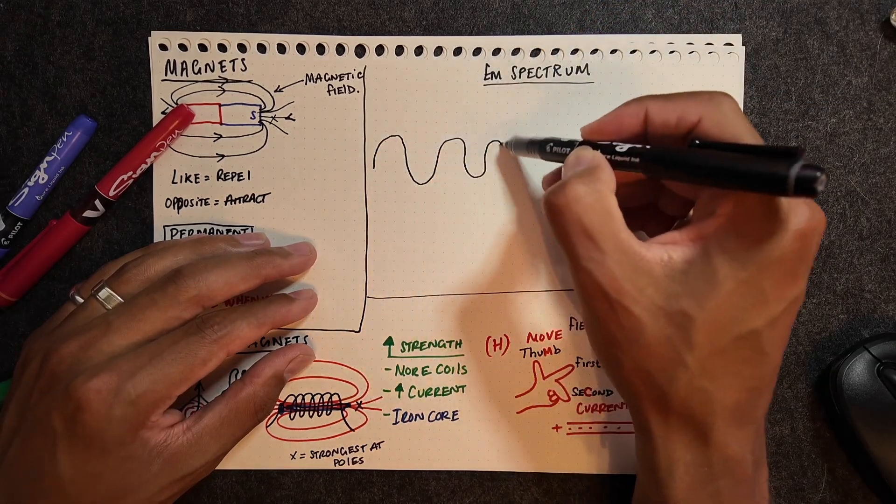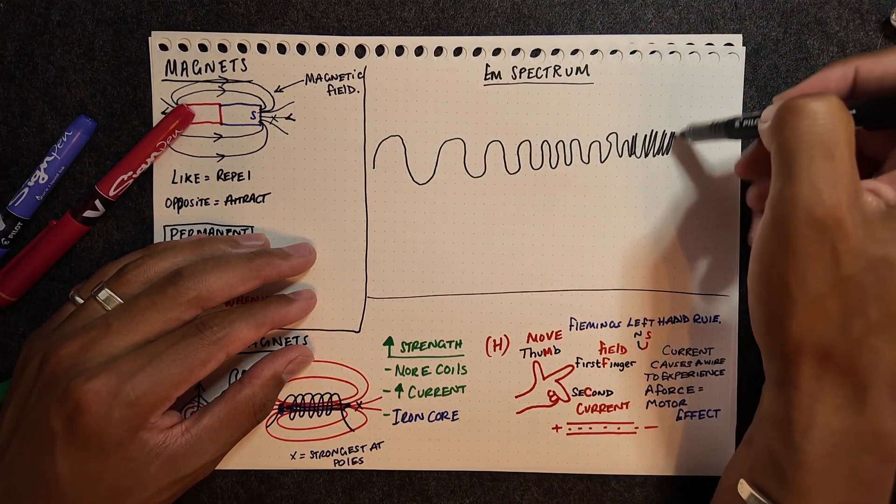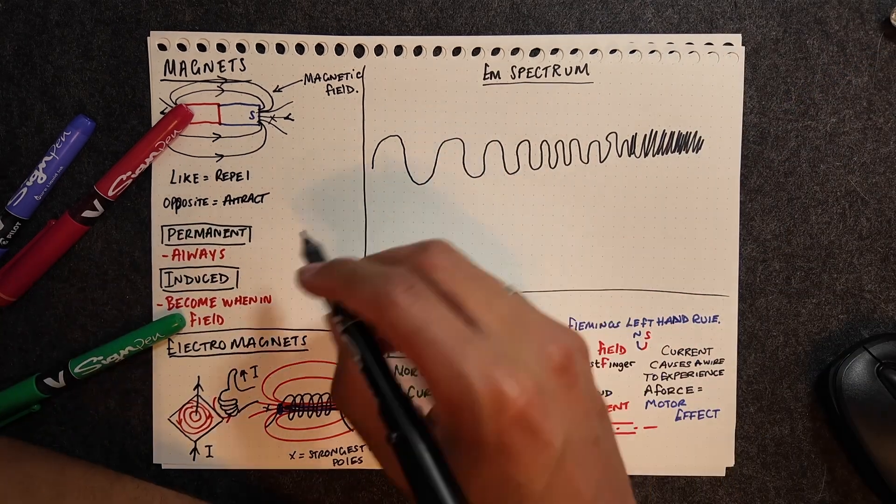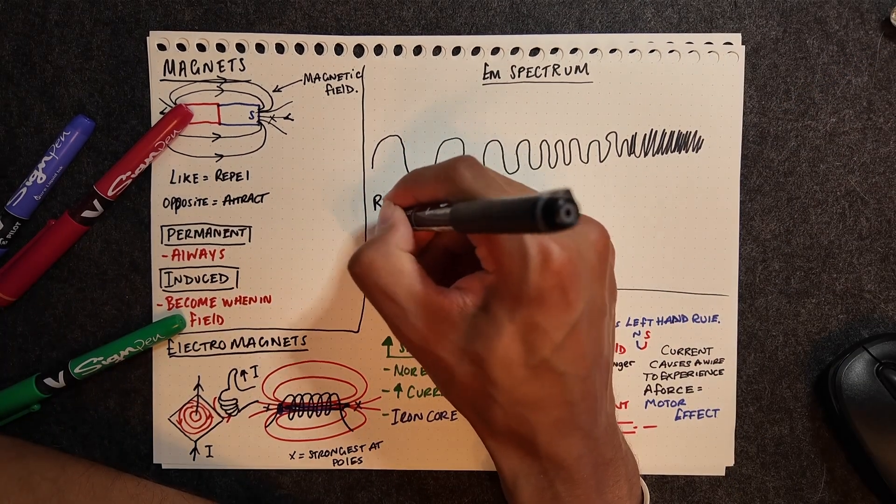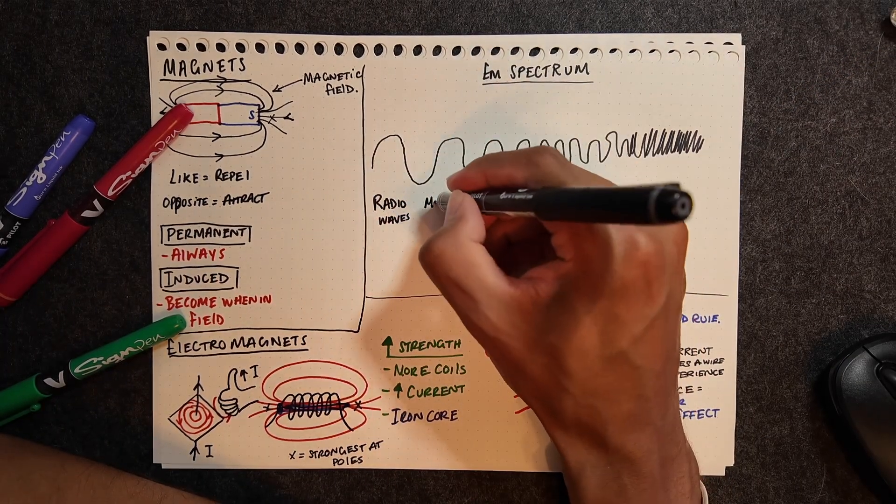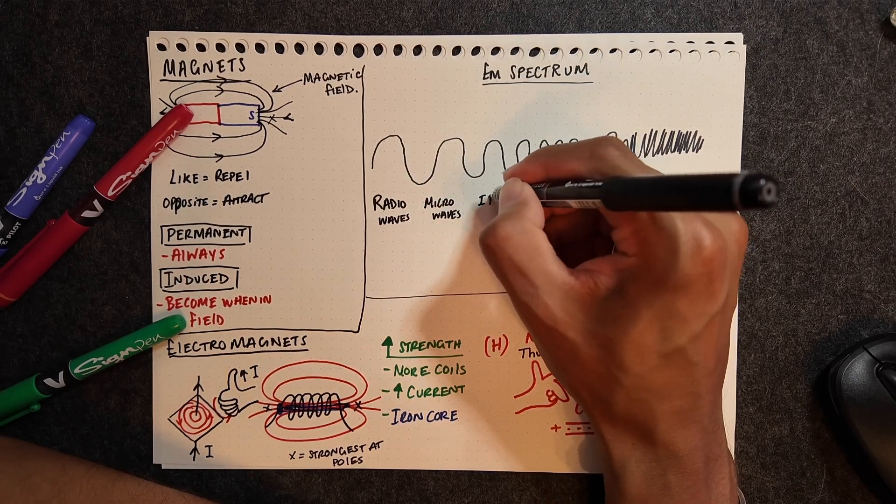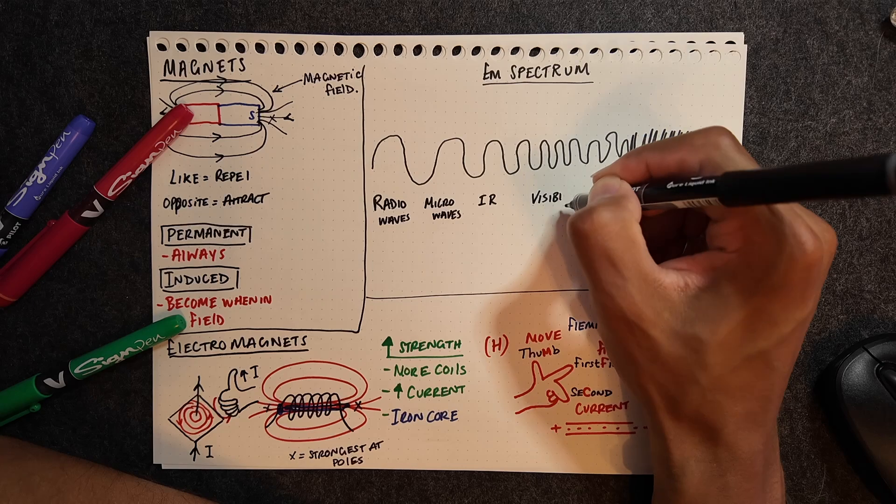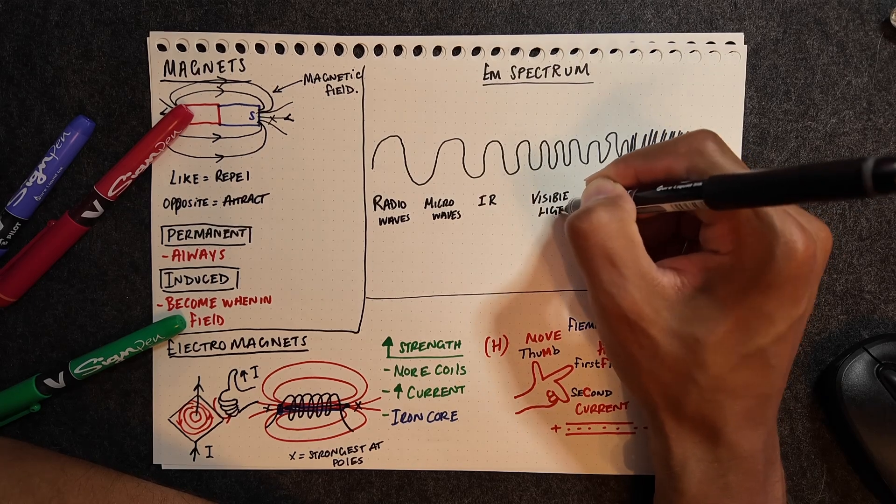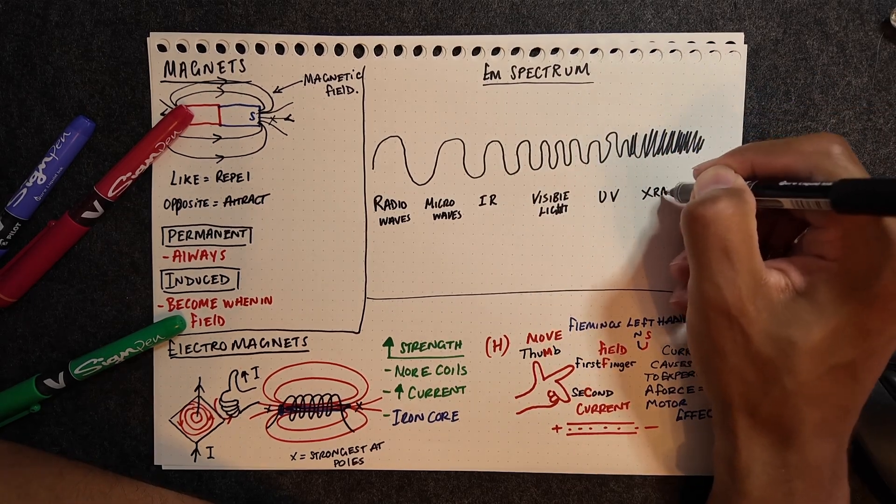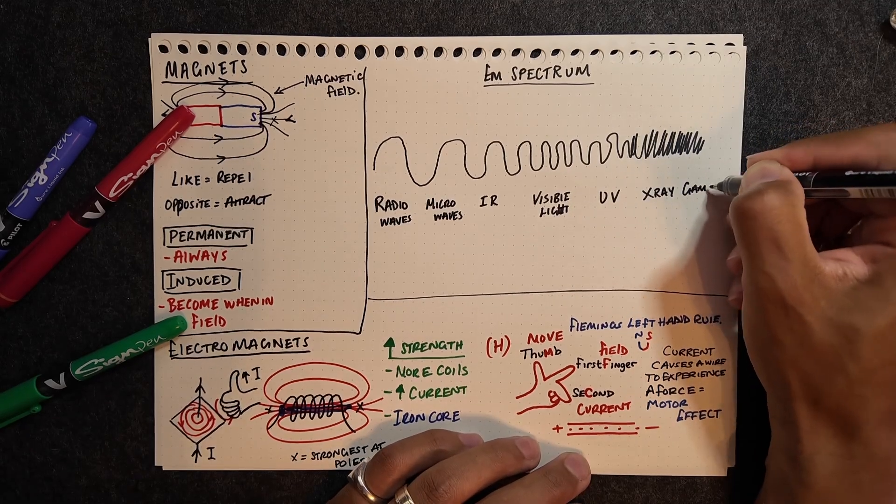The next part that we're going to talk about is the electromagnetic spectrum. Here I've tried to draw a spectrum of waves, and they will go from radio waves to microwaves, infrared radiation, visible light, ultraviolet, x-rays, and then gamma rays.